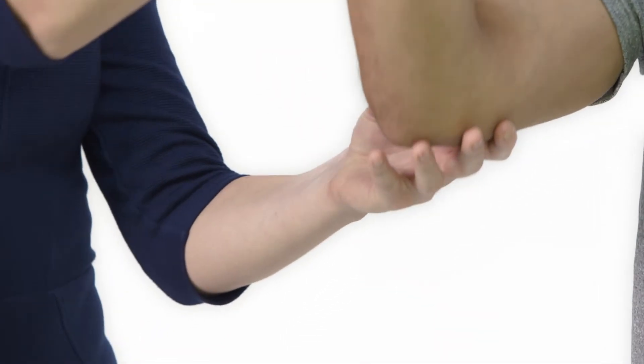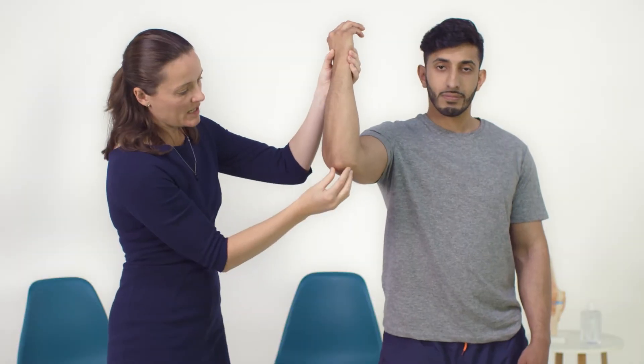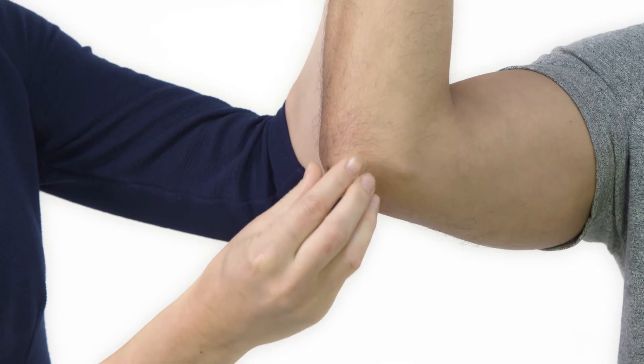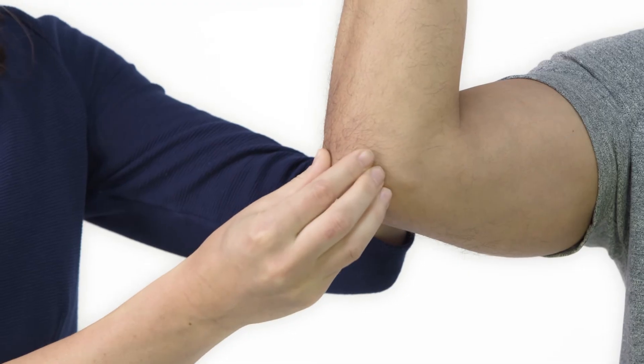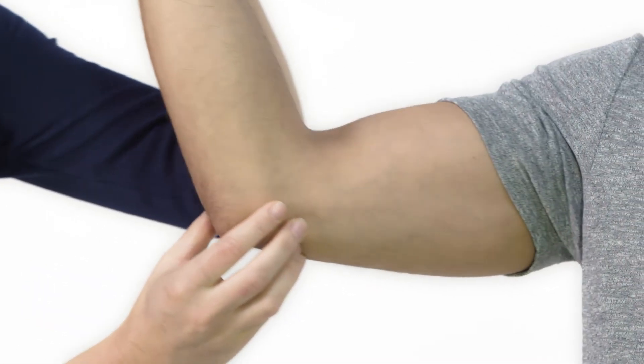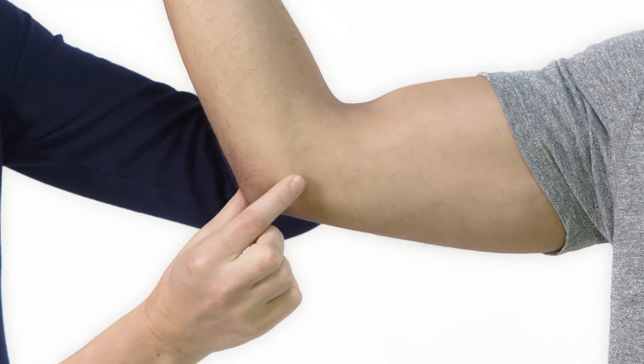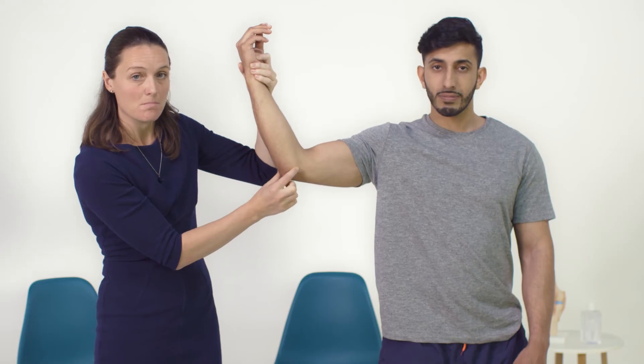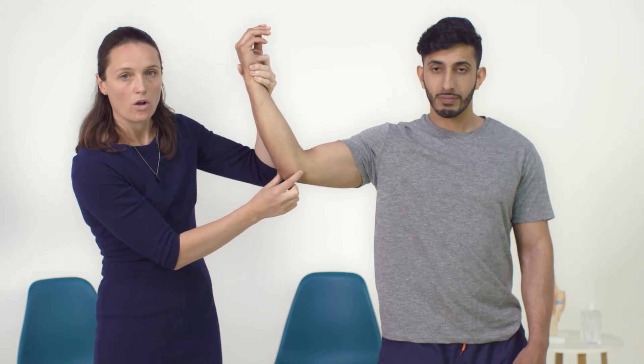And then I'm going to palpate the structures around the back. So again, palpating over the olecranon which might be tender if someone has olecranon bursitis and then over the medial epicondyle which might be tender if the patient has medial epicondylitis or golfer's elbow.